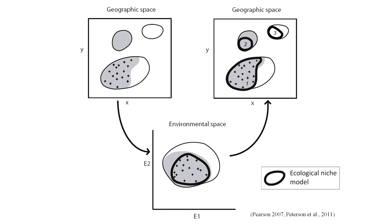Remember, this is how we build our models: we start in geographic space, build the model in environmental space, and then project back to geographic space. We talked about three types of predictions we would expect to make. The theory is that if we build our models based on known occurrence records and make these kinds of predictions, what we're going to do is guide the fieldwork.